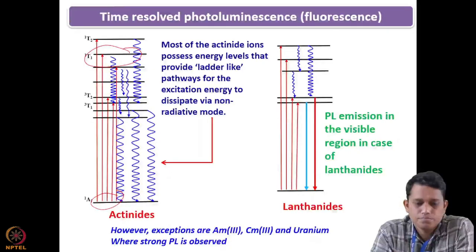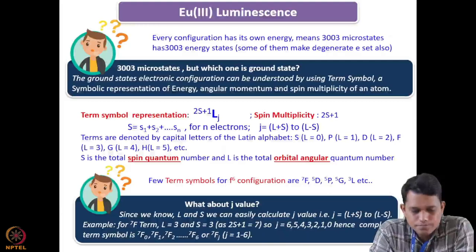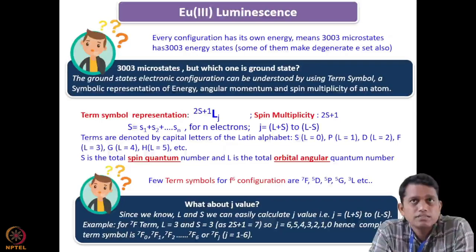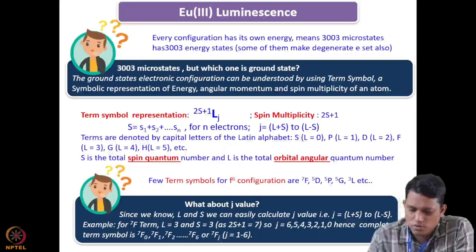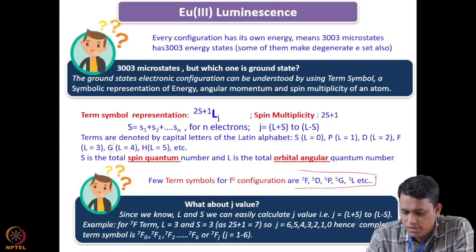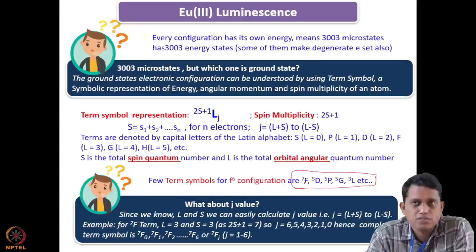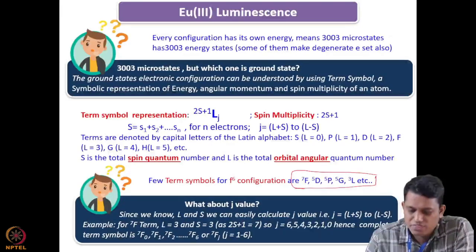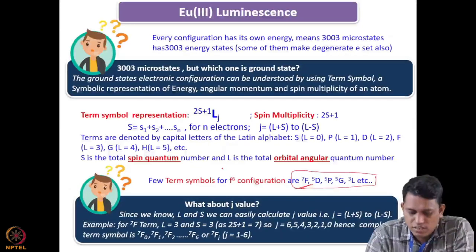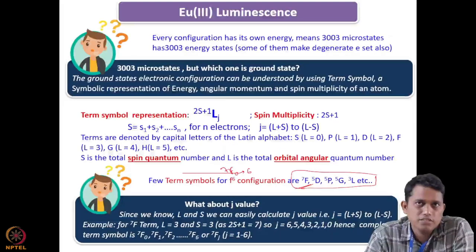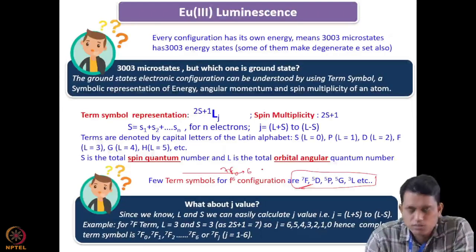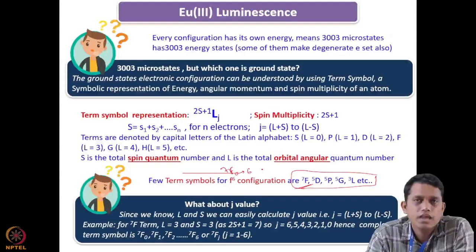For others, although they can give some emission, they lie in the NIR region, so we cannot call them fluorescent. In the fluorescence region we mainly get americium, curium, and uranium because these emit in the visible region. We have already discussed term symbols, so I won't go into details, but since we are studying luminescence using europium as an example, I just want to highlight that europium(III) with an f6 configuration has a 7F state, with J levels from 7F0 to 7F6. The ground state is 7F0 and 7F6 is the highest state in this 7F level.